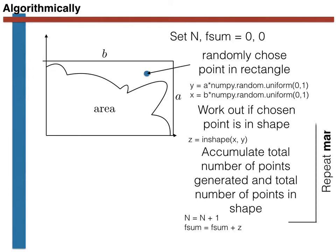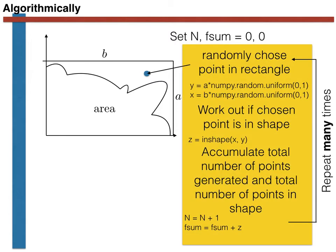The code repeats this procedure of selecting random points and accumulating these quantities, n and fsum, many times. In other words, all the code in the yellow box here will need to be inside a for loop. Once this for loop is completed, the final integral is calculated using the expression shown at the bottom of the slide.